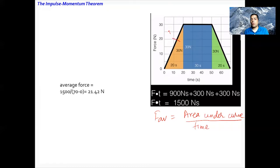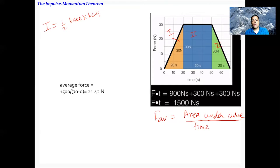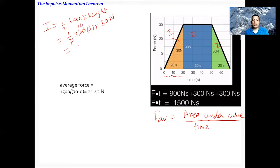Let's calculate the area. Part one is the orange triangle. The area of a triangle is one-half base times height. The base is 20 seconds and the height is 30 newtons, giving one-half times 20 times 30, which is 300 newton-seconds.